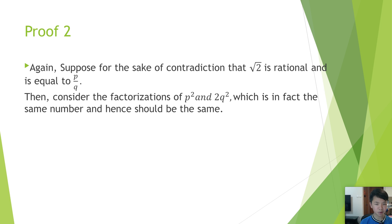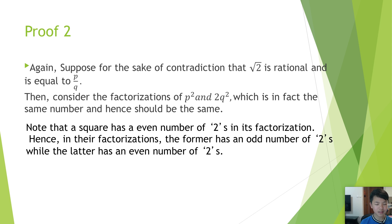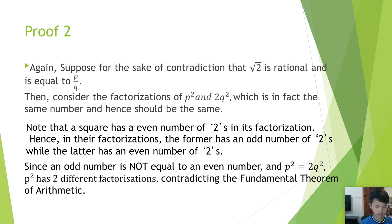Proof 2. Again, suppose for the sake of contradiction that the square root of 2 is rational and is equal to p over q. Then consider the factorizations of p squared and 2q squared, which is in fact the same number and hence should be the same. Note that a square has an even number of twos in its factorization. Hence, in their factorizations, the former has an even number of twos while the latter has an odd number of twos. Since an odd number is not equal to an even number and p squared equals 2q squared, p squared has two different factorizations, contradicting the fundamental theorem of arithmetic.